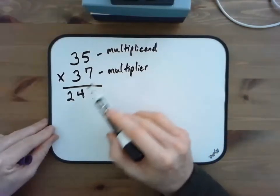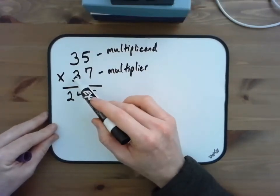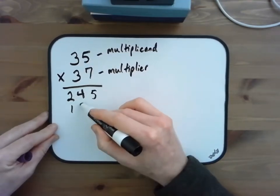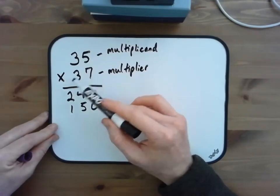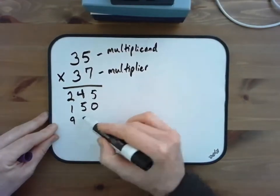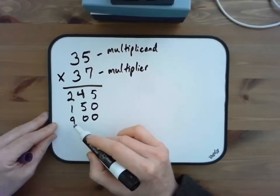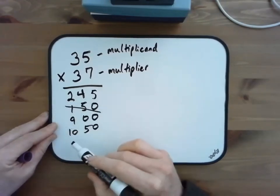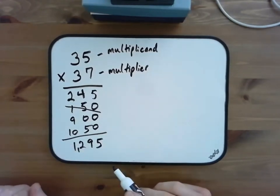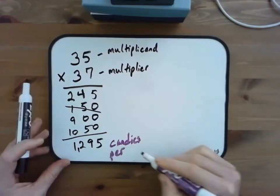Now I'll multiply 35 by 30. 30 times 5 is 150. And 30 times 30 — 3 times 3 is 9 with 2 zeros — is 900. I add 900 and 150 to get 1,050. 1,050 plus 245 is 1,295. And this is candies per box.